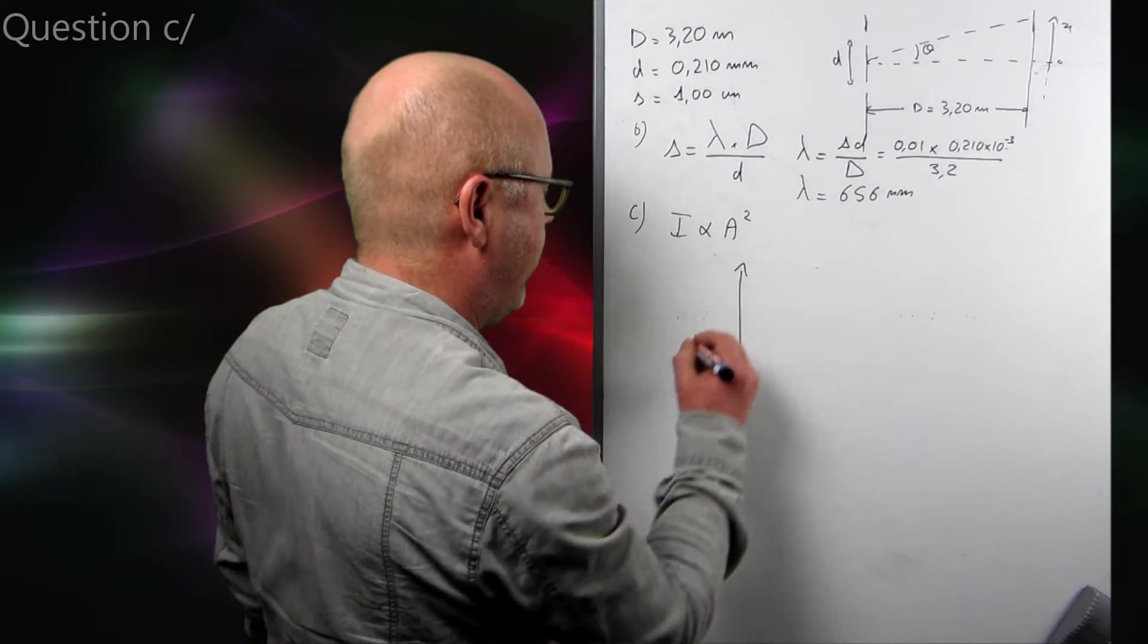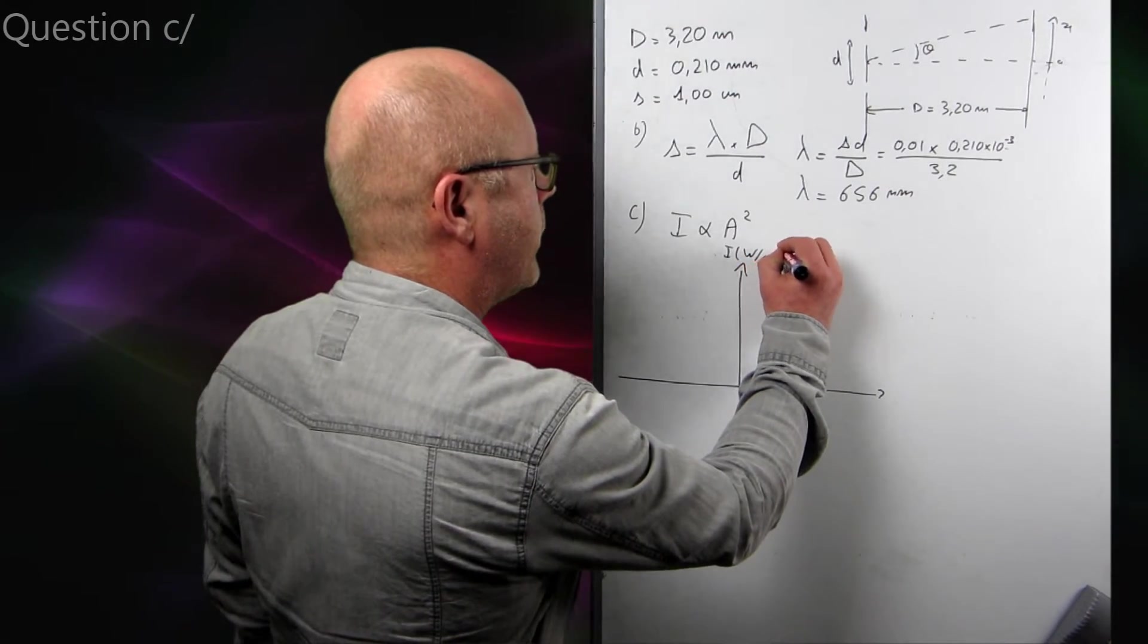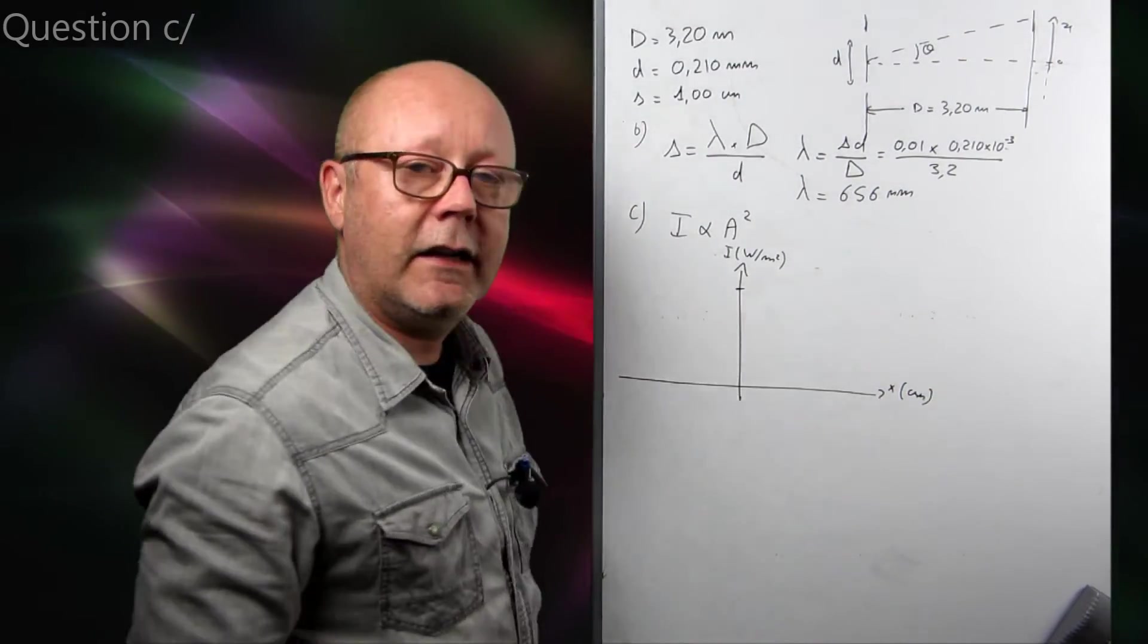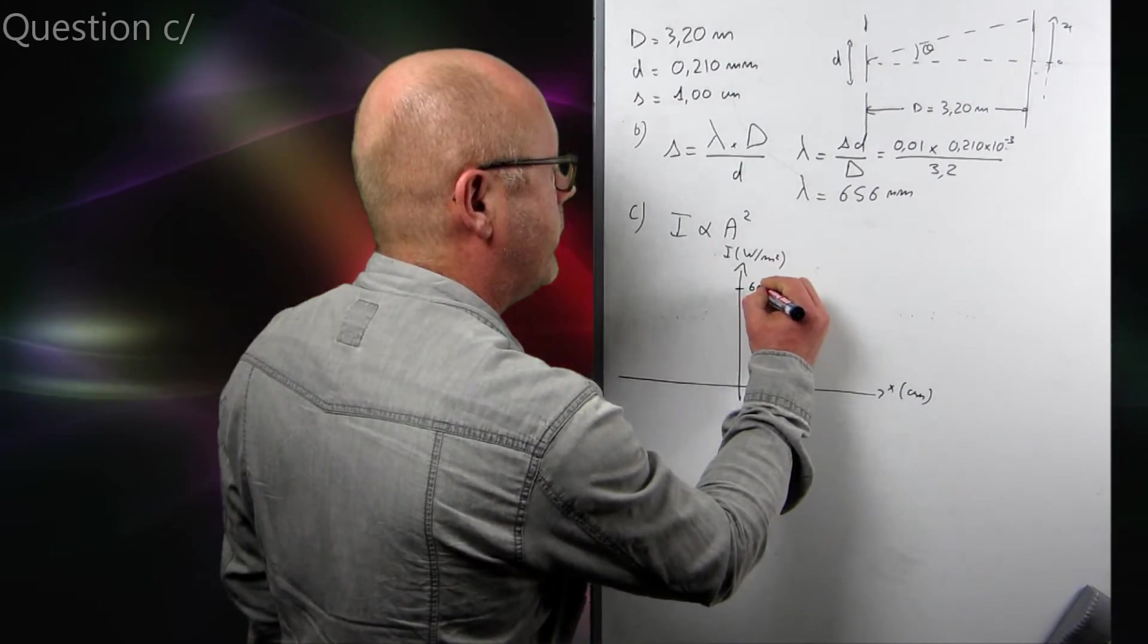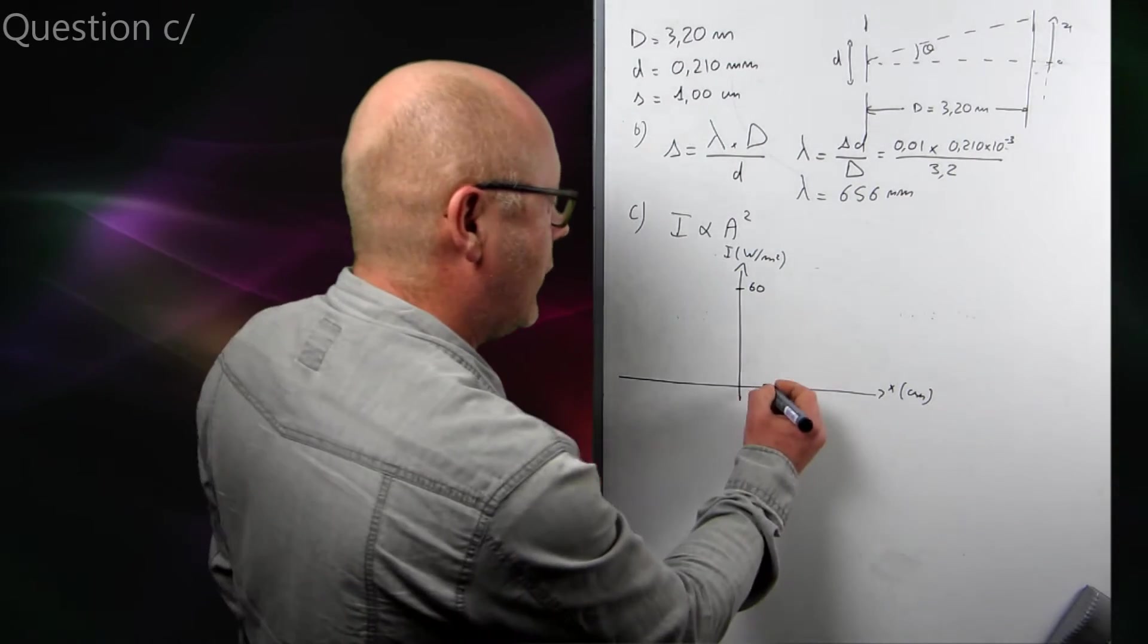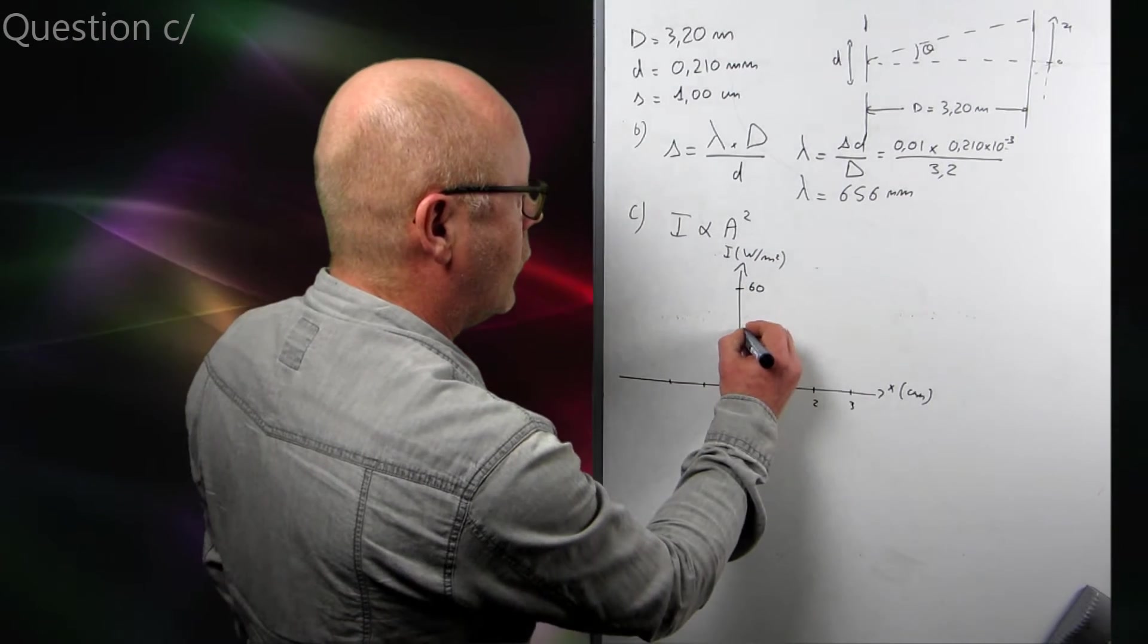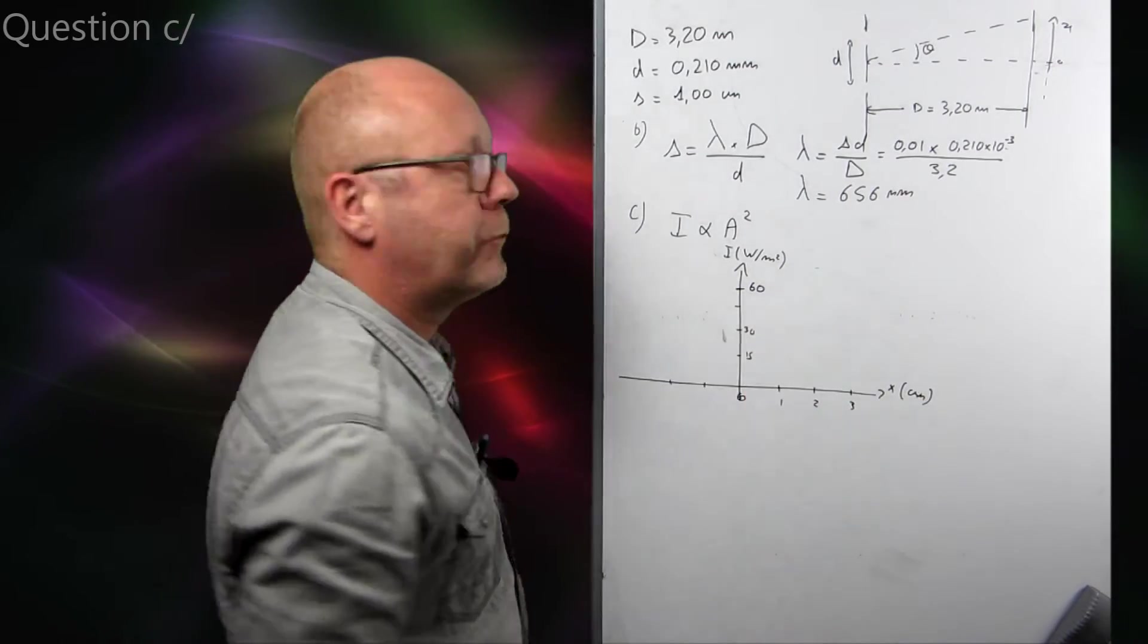So, when we draw a graph, we put first the axis, that would be the intensity in watts per meter square. That would be the distance from the central fringe, so in centimeters. You know that the maximum intensity will be not 15, not 30, but 60 watts per meter square. You also know that the distance between the fringes is one centimeter, so that's why you can scale your axis with one centimeter ticks. And here you could also scale, for instance, with 30, 15, etc.